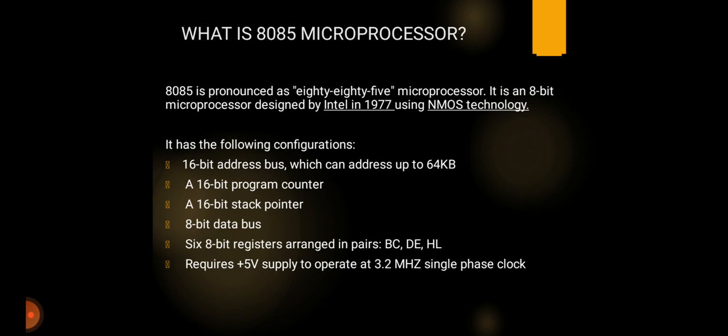The 8085 has the following configurations: a 16-bit address bus which can address up to 64 KB, a 16-bit program counter, a 16-bit stack pointer, an 8-bit data bus, and 6 8-bit registers arranged in pairs — BC, DE, and HL. It also requires 5V to operate at a 3.2 MHz single-phase clock.